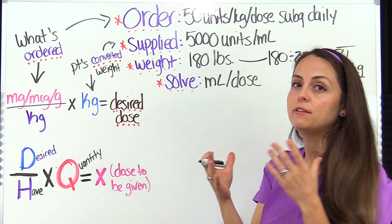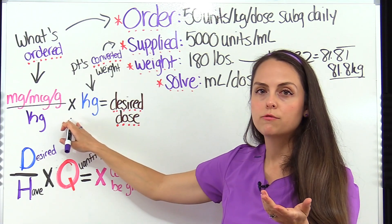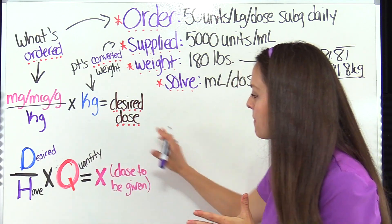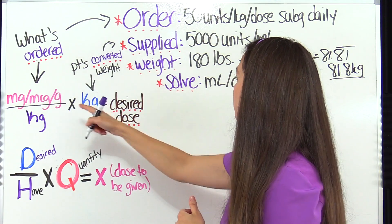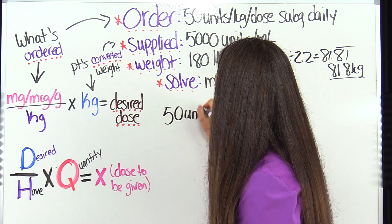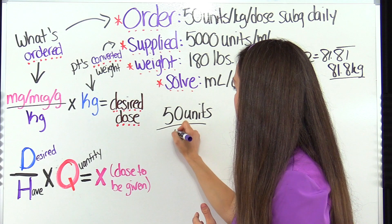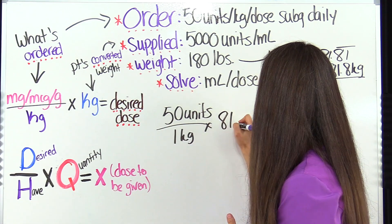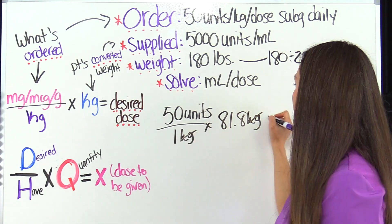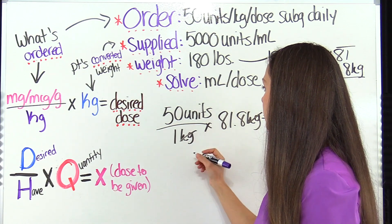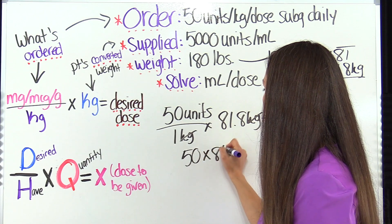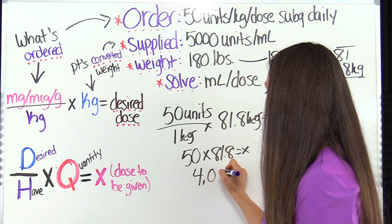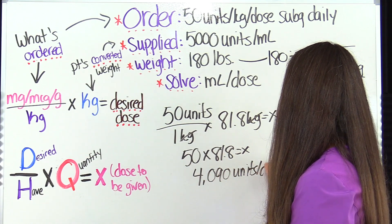Because it says for every kilogram the patient weighs they need 50 units, the first step is to plug into the formula and get the desired dose. So: 50 units over one kilogram, multiplied by 81.8 kilograms. Kilograms cancels out. 50 divided by one is 50, times 81.8 gives us 4,090 units per dose — that is what this patient needs.